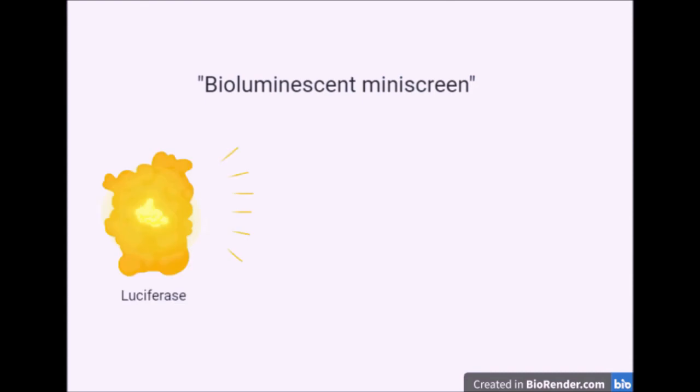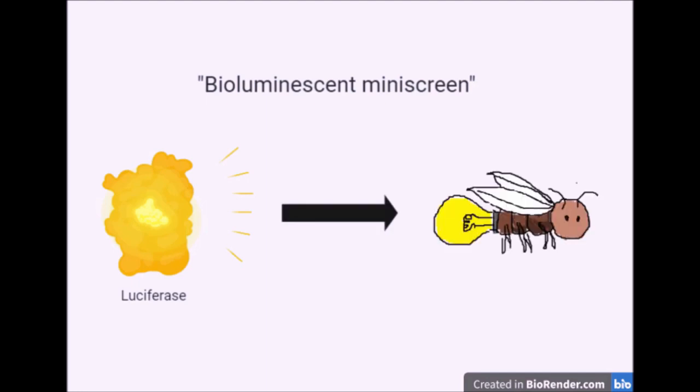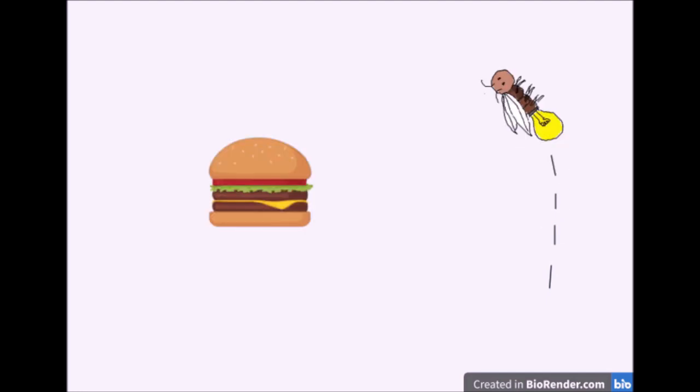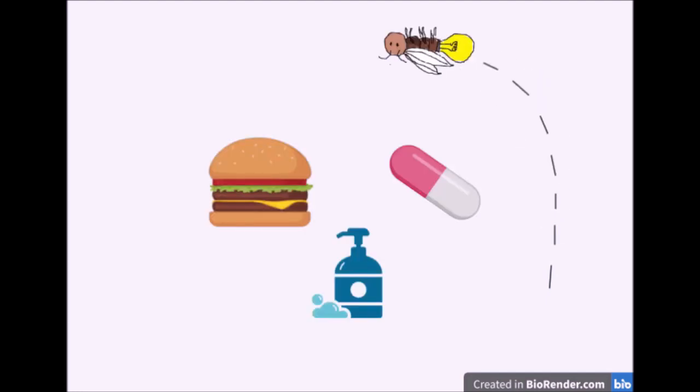Another Ames test variation is the bioluminescent mini screen. Each time a mutation takes place, a light signal is produced by an enzyme called luciferase — the same biologically produced light that you can observe in fireflies. As you can see, the Ames test can be changed and used in many ways due to its simple principle, resulting in high development potential for further efficient methods to identify mutagenic substances in our food, cosmetics, and drugs.